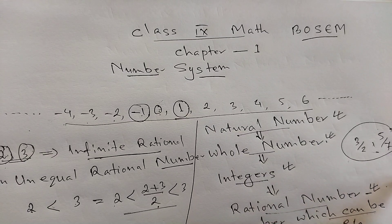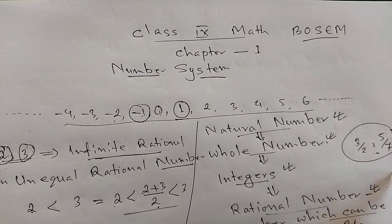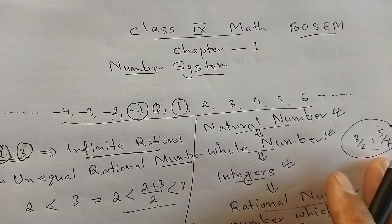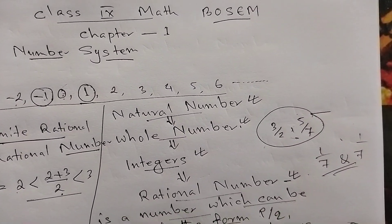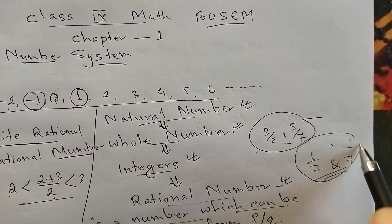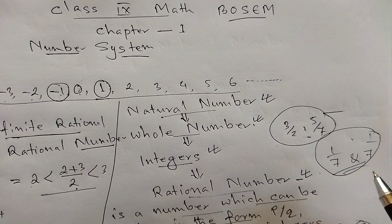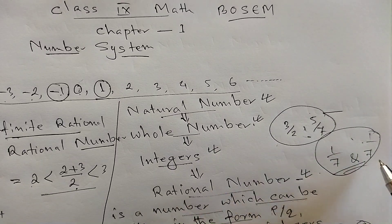For example, 1 by 7 and numbers like it. Every rational number can be written in P by Q form. If you want to find out more, you can explore further.